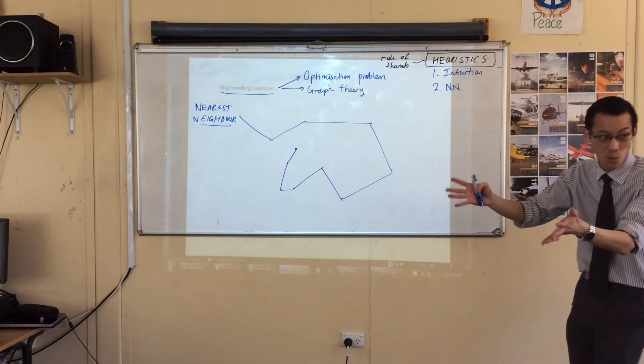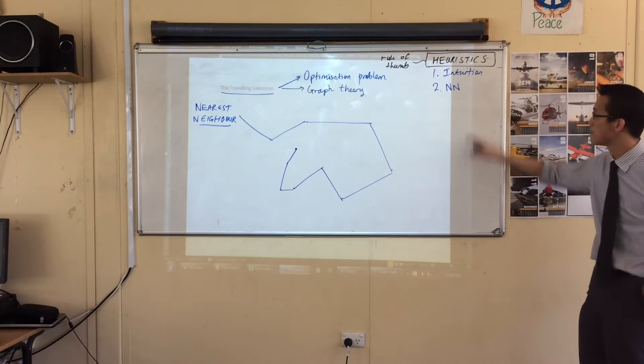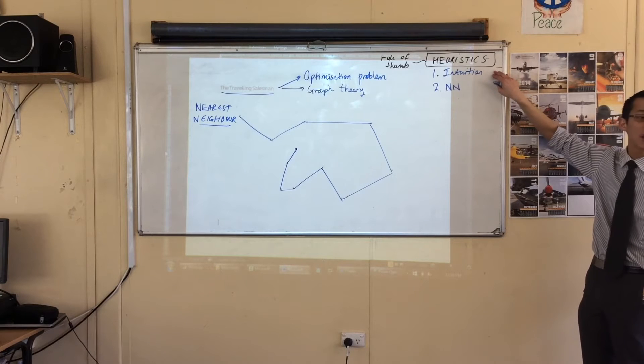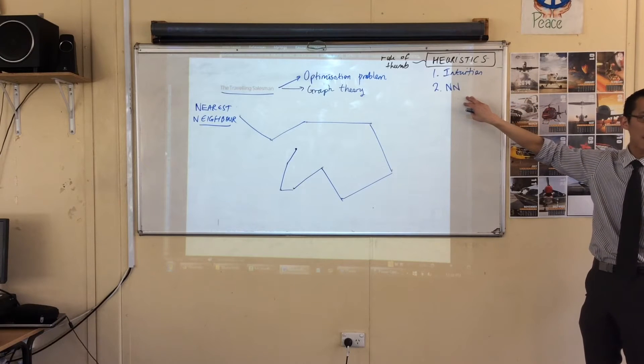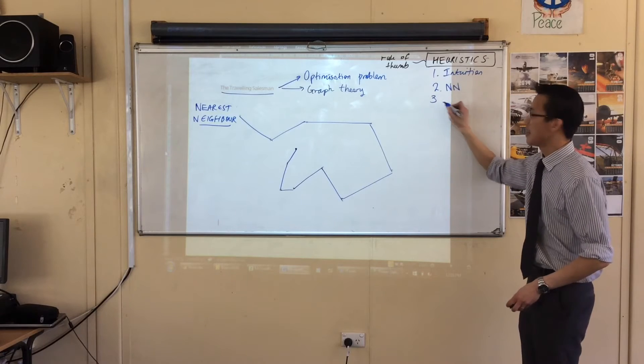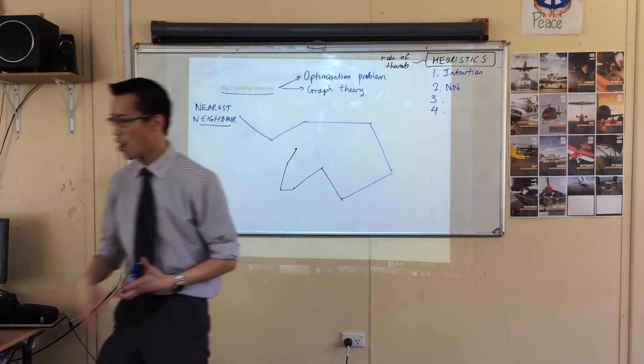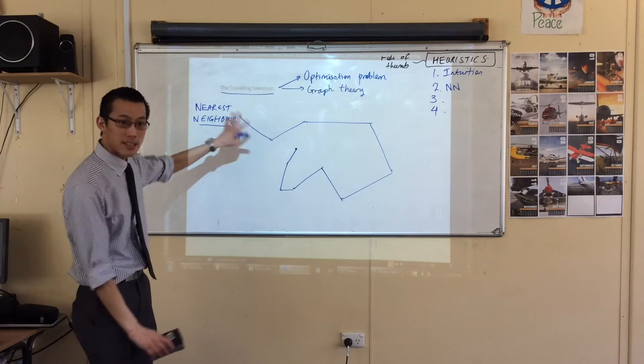Most of the time, it will give you a common sense result. A result that's pretty good. Might not be the best one, but it'll be pretty accurate, right? So your intuition's not bad. It's not going to give you a stupid path, but it might not give you the best one. Nearest neighbor, also not necessarily the best. In fact, none of these methods that I'm going to show you are necessarily the best. They're all heuristics.